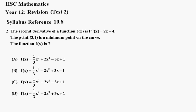Number 2. The second derivative of a function f(x) is f''(x) equals 2x minus 4. The point (3,1) is a minimum point on the curve. The function f(x) is a, b, c, or d.